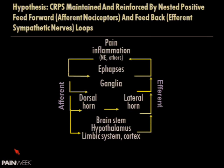This hypothesis allows us to say yes, the Dutch are right; yes, the Germans are right; yes, even the Chicago group is right. If you look at this acutely, you'll see peripheral inflammation. If you look chronically, you'll see central sensitization. That really is exactly how it boils out in terms of the referral bias of those groups. Our German colleagues focus on the efferent sympathetic nervous system side. This nested loops model is unifying.